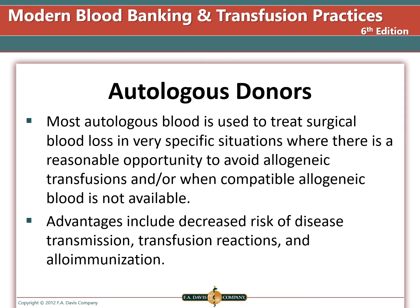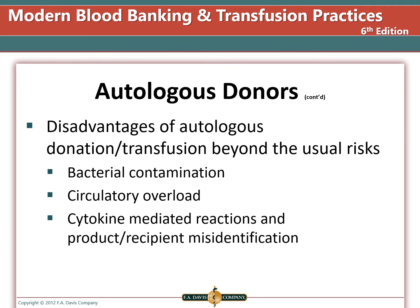Alloimmunization is when the patient makes antibodies to the antigens on the transfused red blood cells that they lack on their own red blood cells. The disadvantages of autologous donation or transfusion beyond the usual risks include that the units could become bacterially contaminated if the patient is ill, the patient could develop circulatory overload if the surgery gives the blood back even when it is not really needed, the patient could accidentally get someone else's blood due to misidentification, and cytokine-mediated reactions if the unit is not leukoreduced.